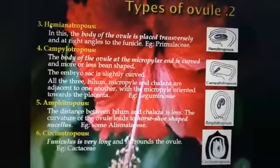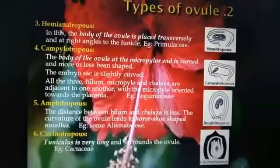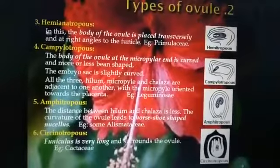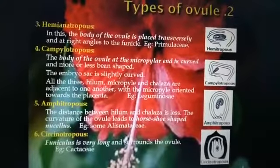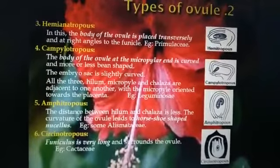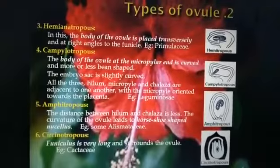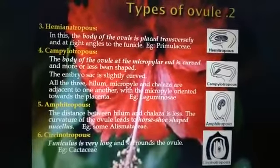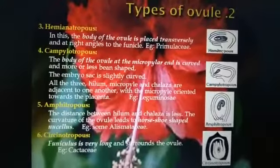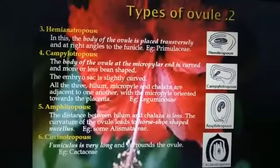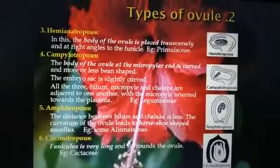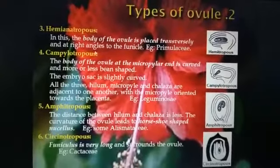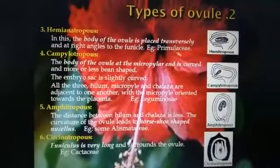The next type is the hemi-anatropous ovule. Since 'hemi' means half, this ovule undergoes half the rotation of the anatropous ovule — that is, 90-degree rotation instead of 180 degrees. In this type, the body of the ovule is placed transversely, so the micropyle, chalaza, and nucellus are all oriented at right angles to the funicle. This type is present in the Primulaceae family.